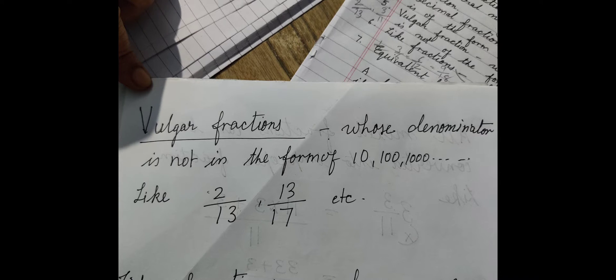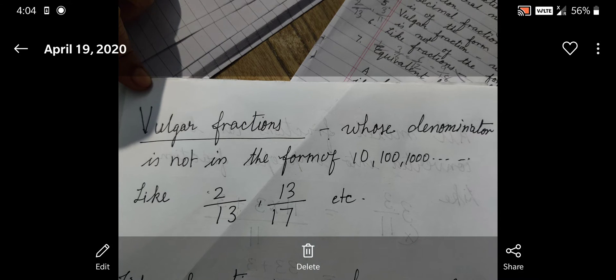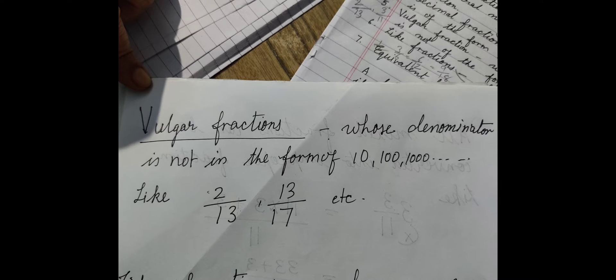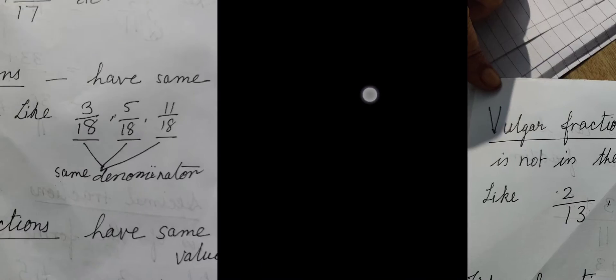The fifth kind of fraction is called vulgar fraction. Vulgar fractions are fractions whose denominator is not in the form of ten, hundred, thousand. Like two upon thirteen, thirteen upon seventeen - you can see the denominators are not ten, hundred, thousand. Neither are they ten, hundred, thousand, nor can they be converted into ten, hundred, thousand. So these fractions are called vulgar fractions.